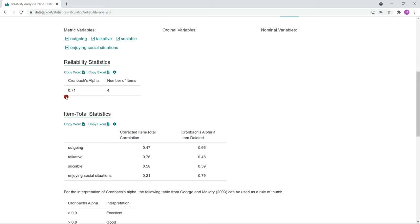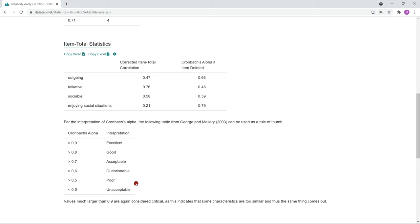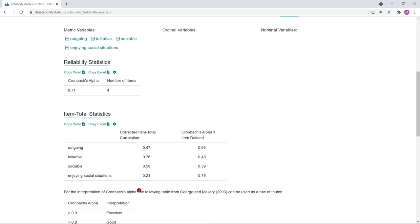In this case, we got a Cronbach's alpha of 0.71. If we take a look at this table, which gives us an indication for the interpretation, we find out that the calculated Cronbach's alpha is just acceptable. What is further interesting now is the item scale statistics. Here we can see how the Cronbach's alpha changes when one of the four items is removed. For example, if we remove the item outgoing, we get a Cronbach's alpha of 0.66, which is smaller.